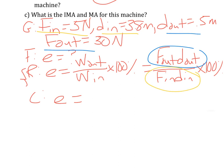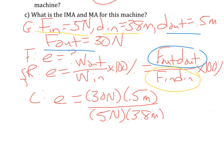So my F out is 30 newtons, my D out is 0.5 meters, and my F in is 5 newtons and my D in is 3.8 meters. Make sure you see those decimals there, and then times 100 percent as we want it to be a percent.